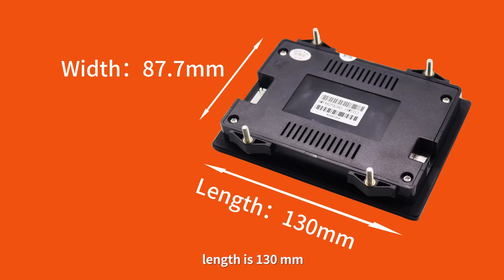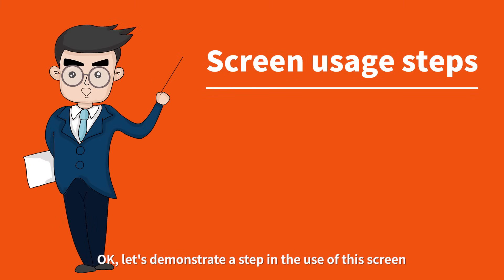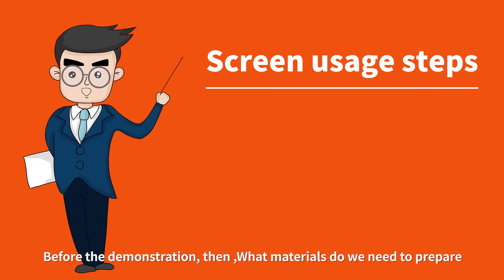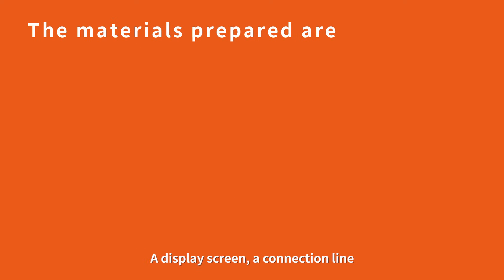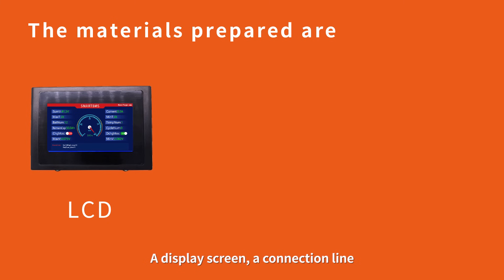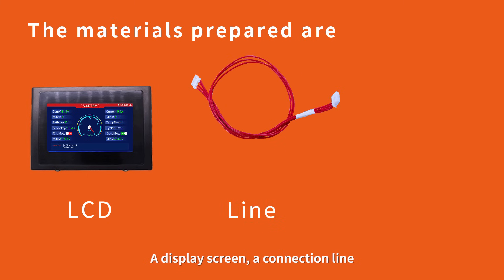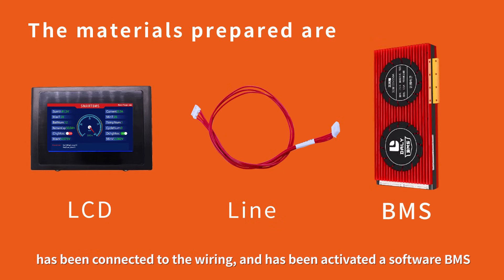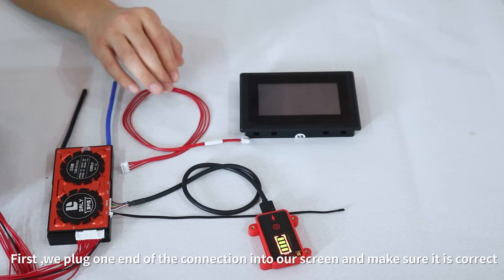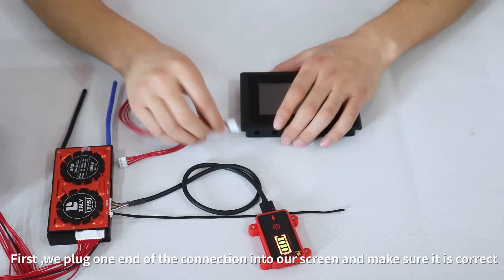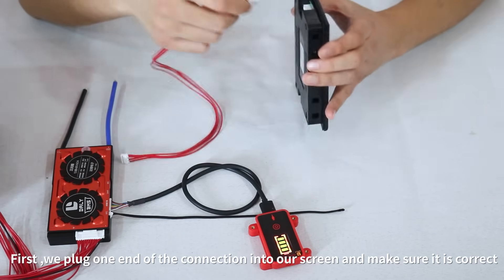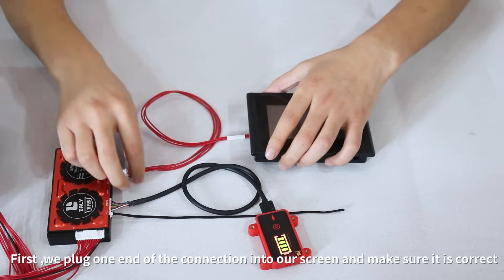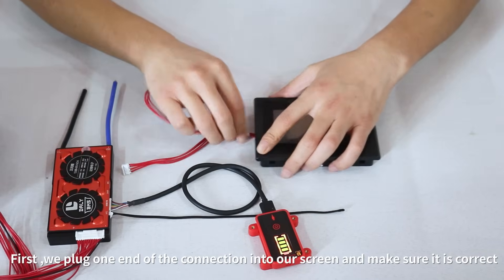Let's demonstrate the steps for using this screen. Before the demonstration, what materials do we need to prepare? A display screen, a connection line that has been connected to the wiring and activated, and a software BMS. First, we plug one end of the connection cable into our screen and make sure it is correctly seated.